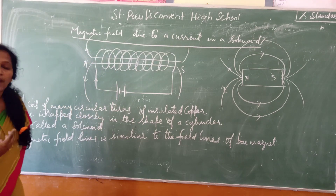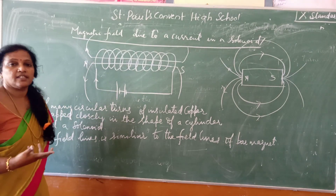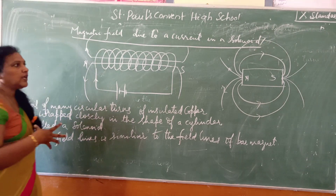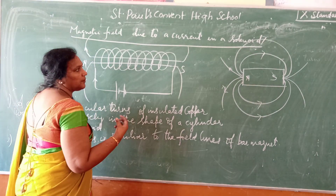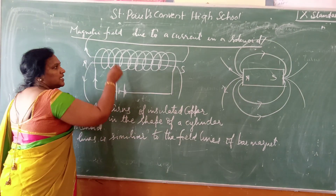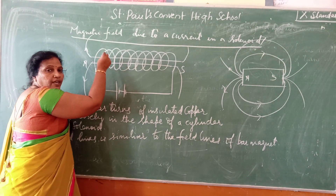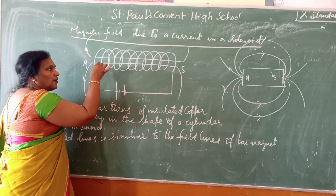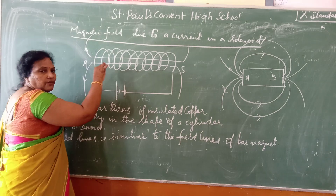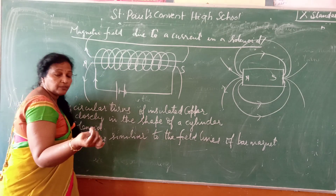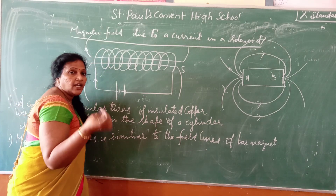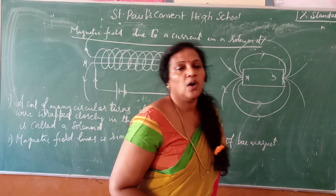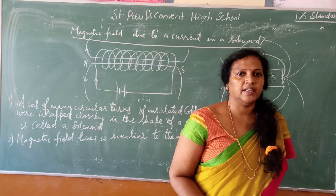If you want to magnetize any magnetic material, you can place it inside the solenoid producing a strong magnetic field. Then after some time, if you remove that magnetic material, it becomes a magnet, and that magnet is called an electromagnet.